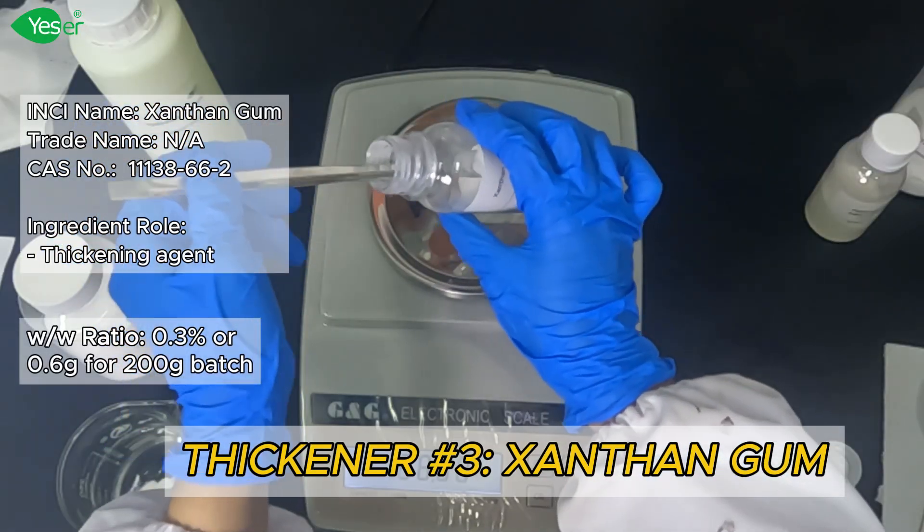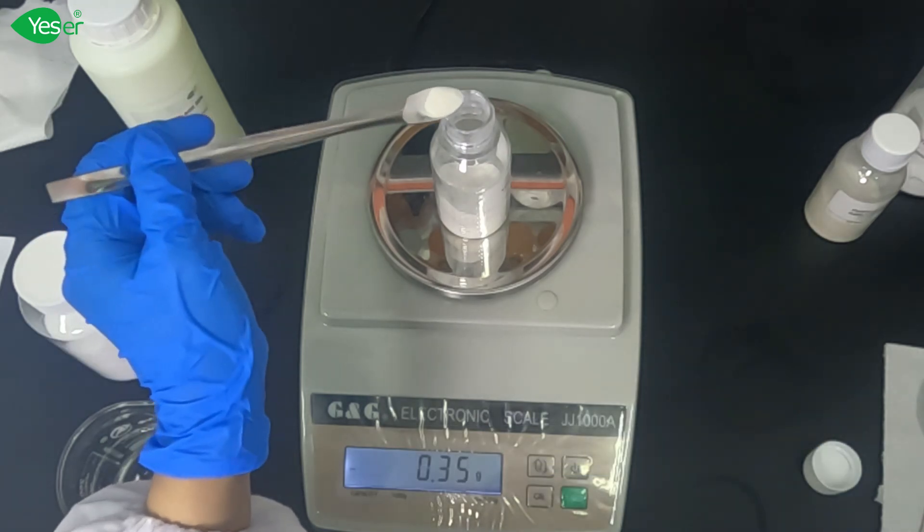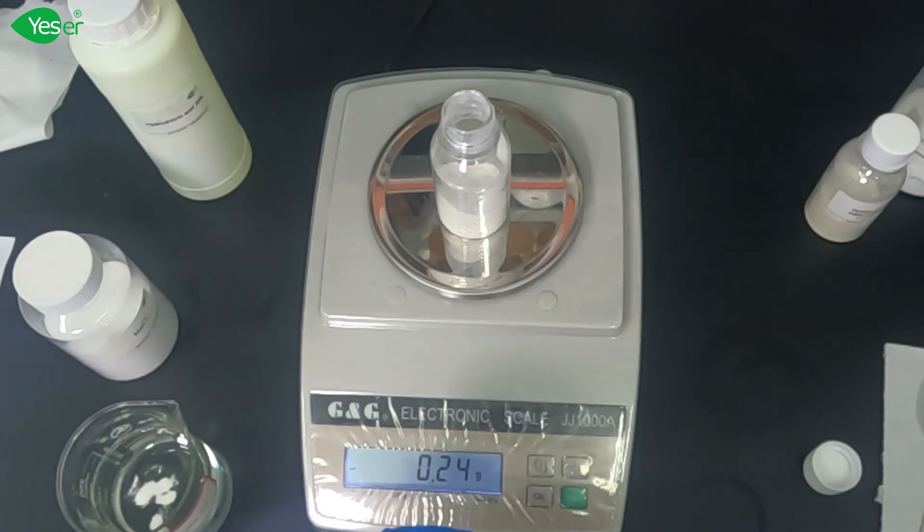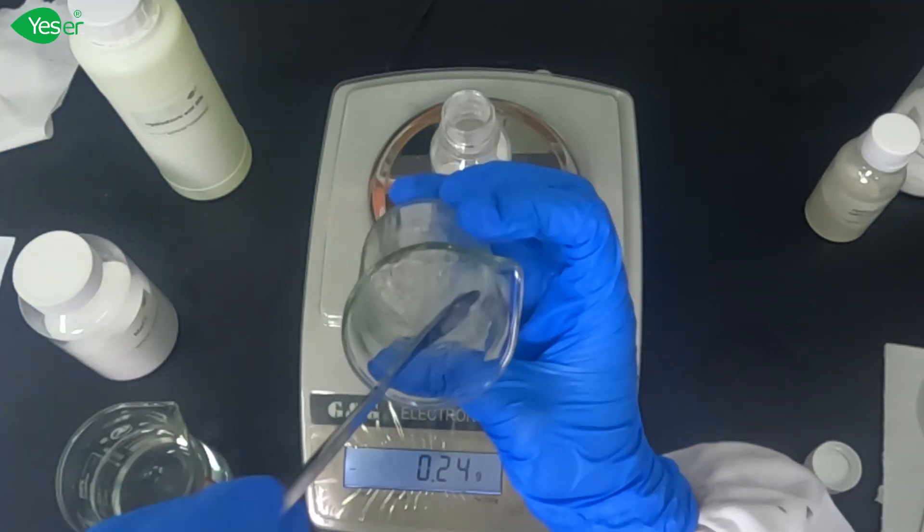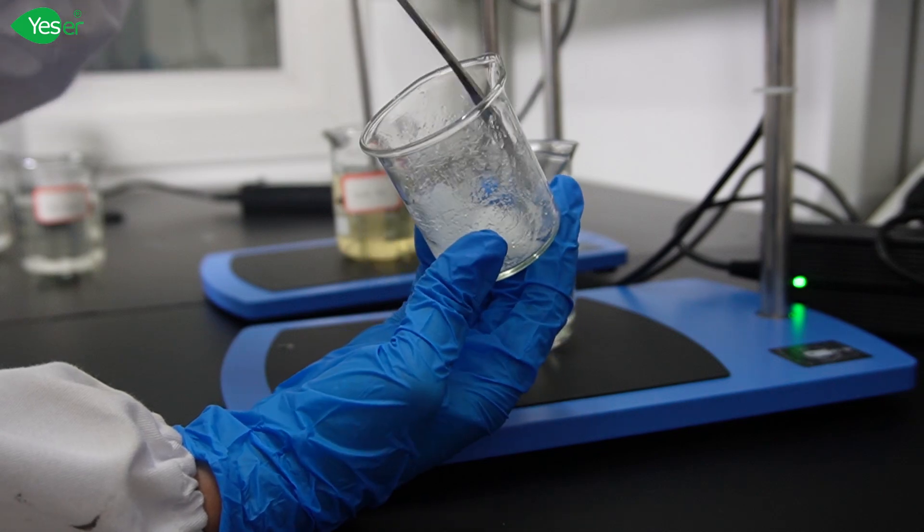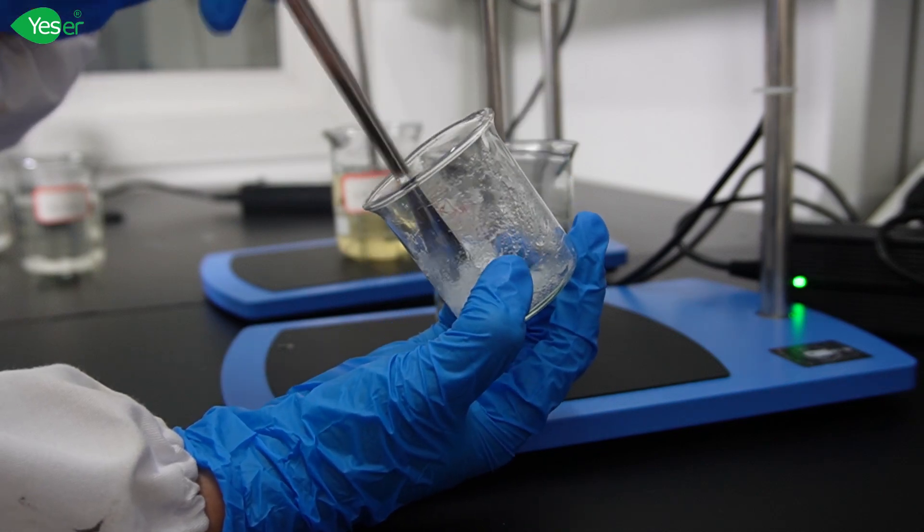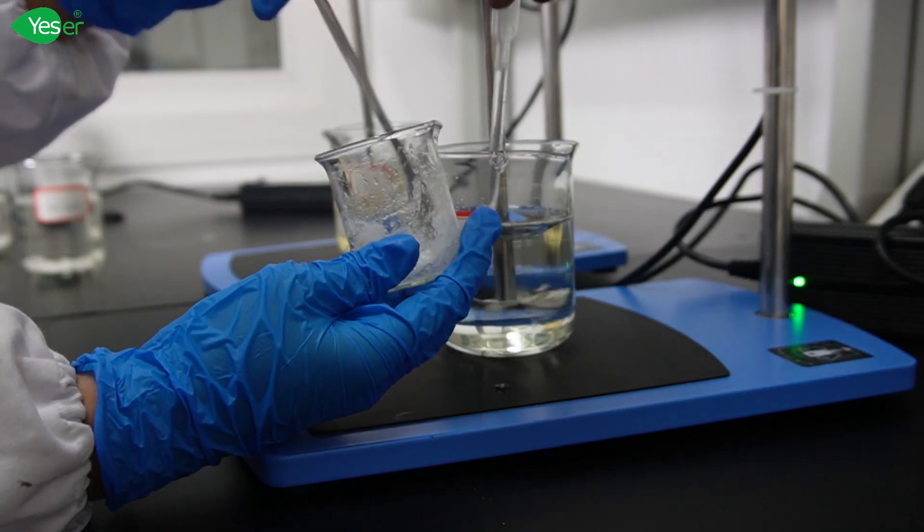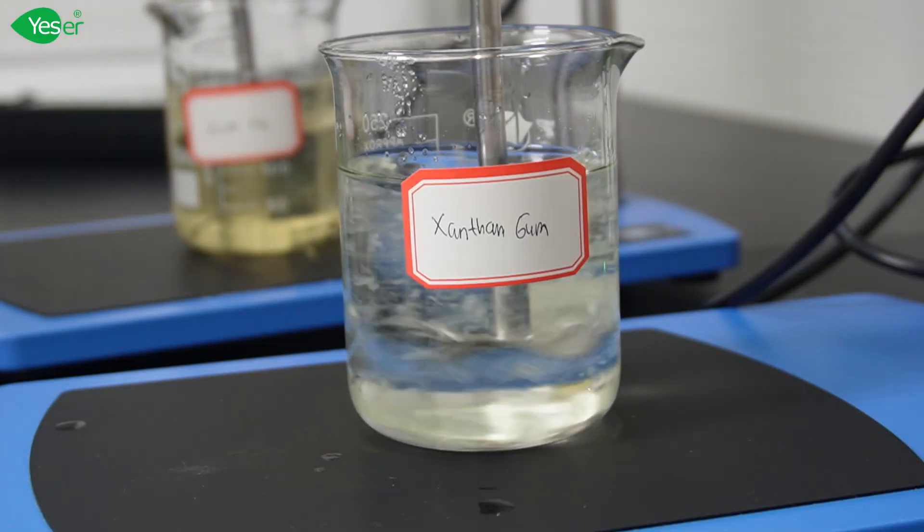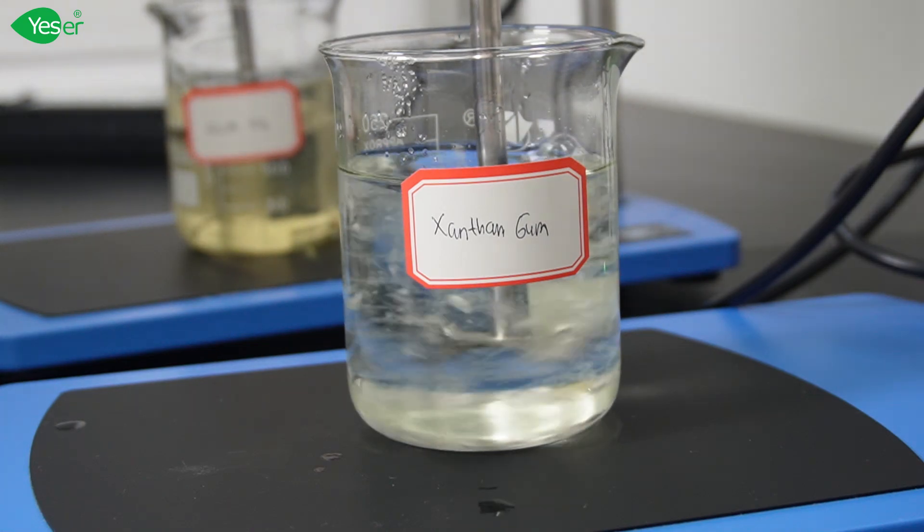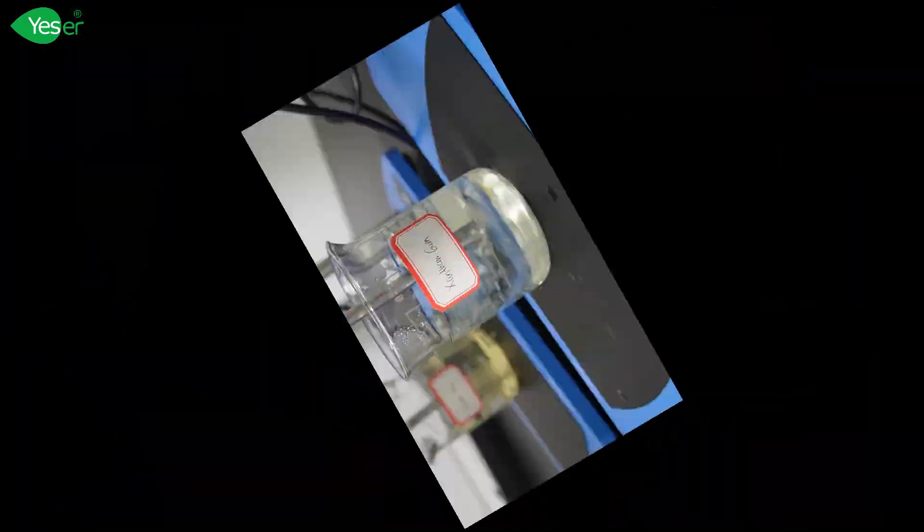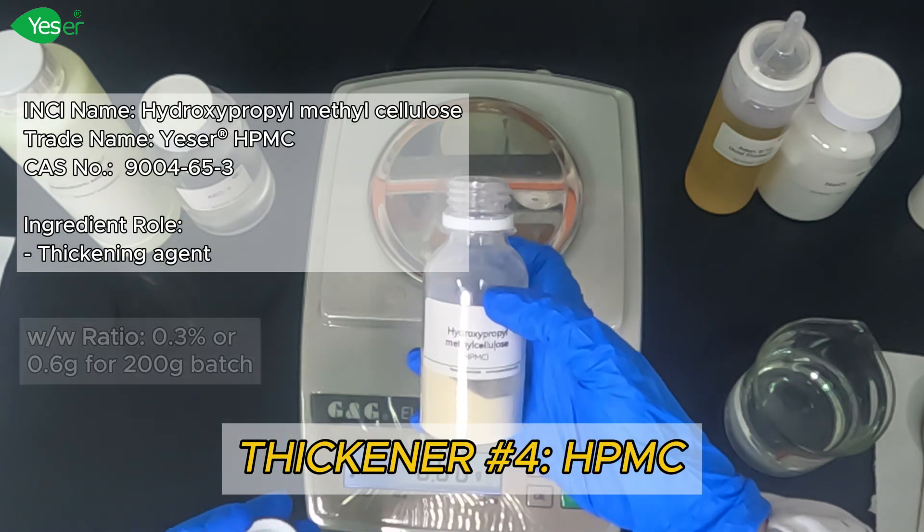Next is our xanthan gum. Let's add 0.3% in our formulation. We need to fully disperse the xanthan gum with a small amount of water before adding it to our acidic solution. While we are stirring the xanthan gum in the solution, we're going to hydrate HPMC, our next thickener, for our last batch. Weigh 0.6 grams of HPMC.